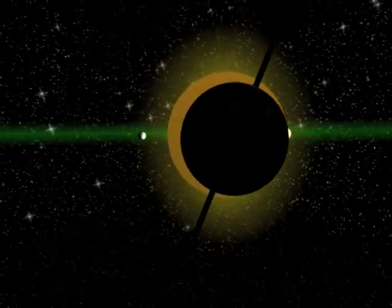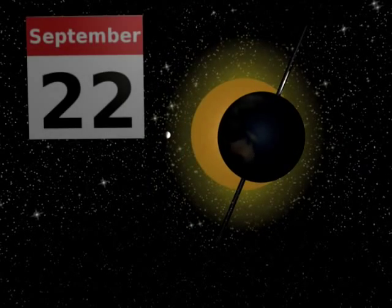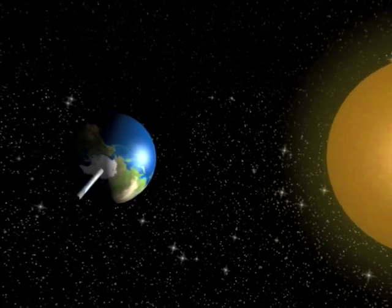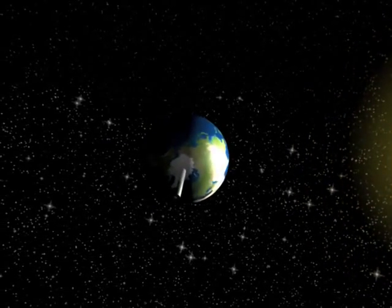Here we see the Earth on the 22nd of September, the autumn equinox, when the northern part of its axis is not pointing towards or away from the sun and day and night are exactly the same length.